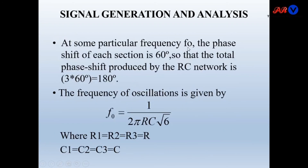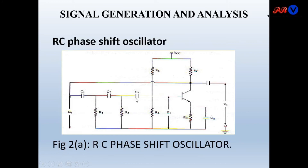At a particular frequency F₀, the phase shift of each RC section is 60 degrees, so the total phase shift produced by the RC network is 3 × 60° = 180 degrees. The frequency of oscillation is given by F₀ = 1/(2π RC√6), where R1 = R2 = R3 = R and C1 = C2 = C3 = C. The transistor in common emitter configuration provides an additional 180 degrees phase shift.